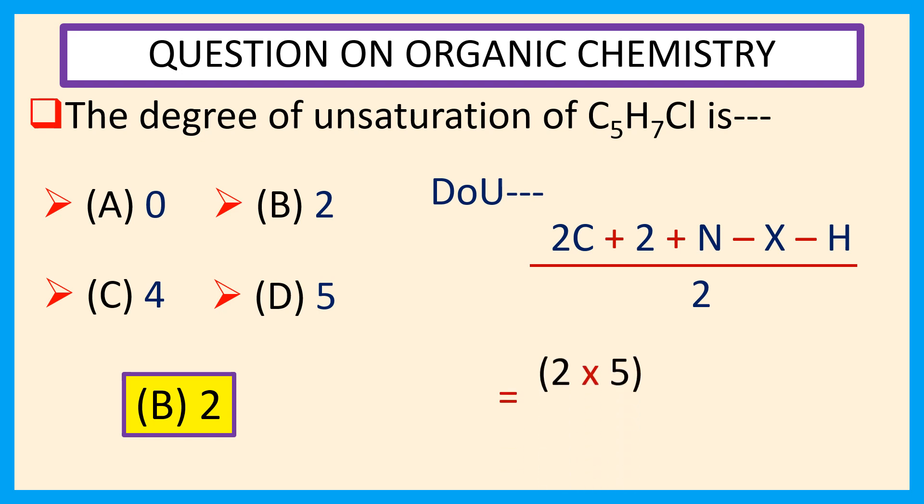Therefore, 2 into 5 for 5 carbon atoms plus 2 plus 0 because nitrogen atom is not present here, minus 1 for 1 Cl atom, minus 7 for 7 hydrogen atoms by 2 is equal to 2.